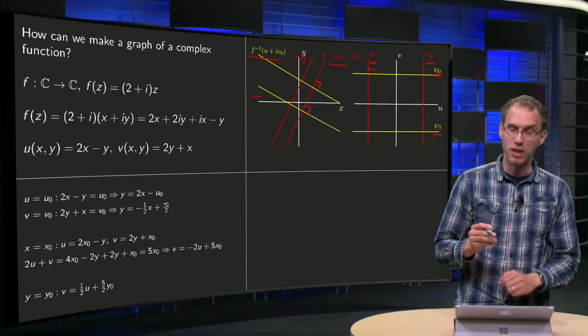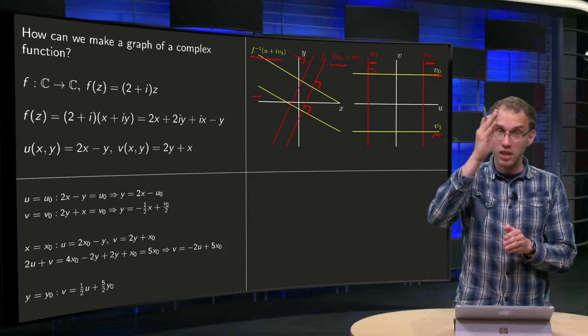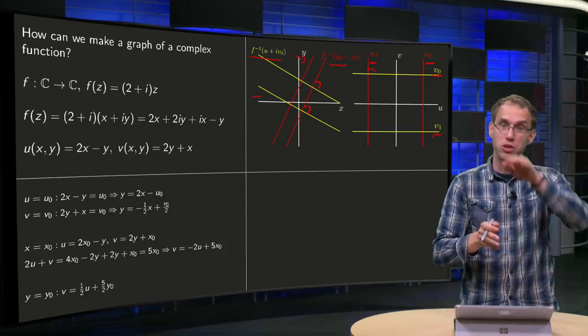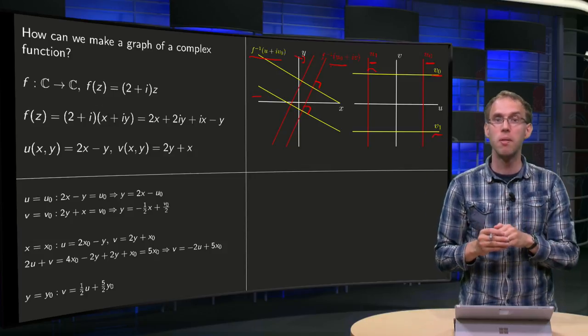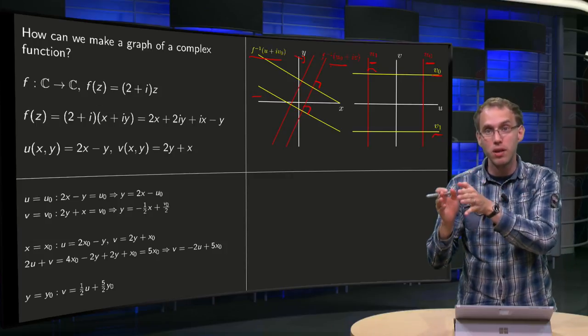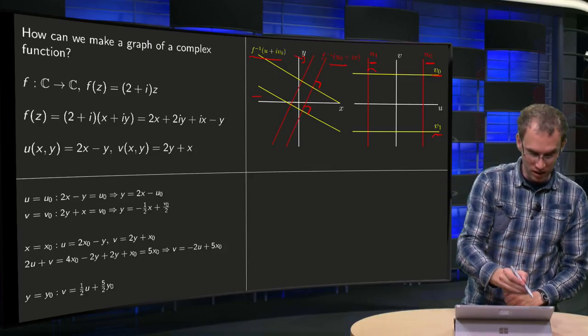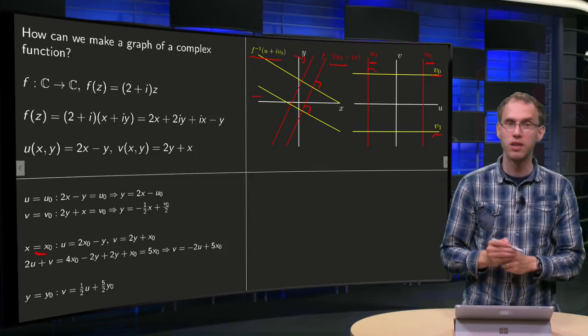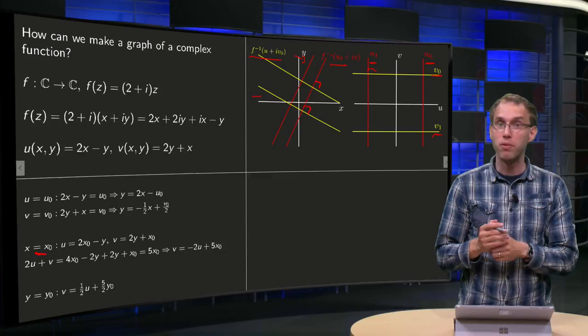The second thing we can do is that we can take lines in the xy plane, where x is constant or where y is constant, and see where those lines in the domain are mapped to in the codomain. So we can set x equals x₀ is constant, and then look in the uv plane what we will get.